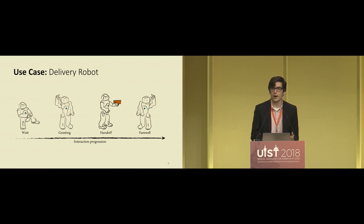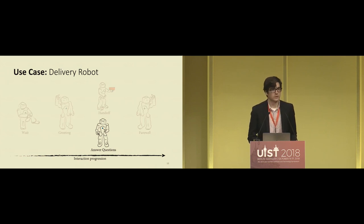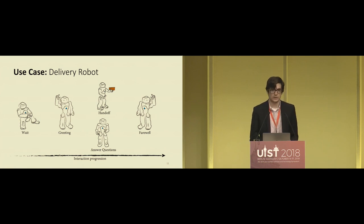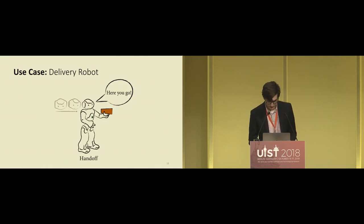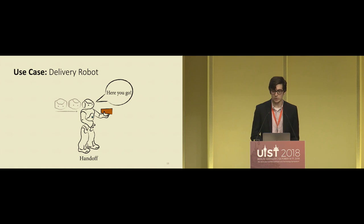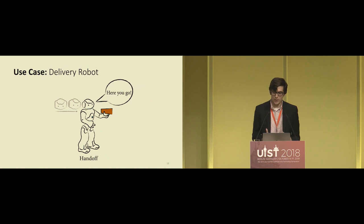Perhaps the human has questions about the delivery, so we can add to our interaction by making the robot available to answer those questions. But we haven't yet considered social norms relevant to individual robot behaviors. Consider the handoff behavior: within it, we have various social norms related to gaze. The robot needs to coordinate its gaze properly — gaze is just one example of a non-verbal norm. Others might involve gesturing or proximity. The robot needs to look at both the human and the package it is handing off.